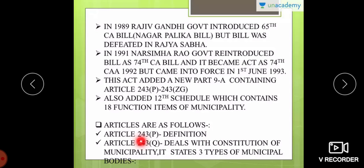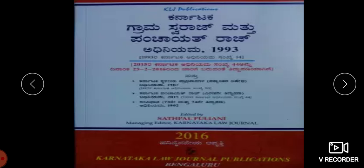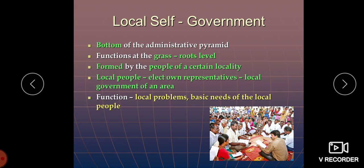Article 243P contains definitions, and Article 243Q gives details about the constitution of municipalities, stating the three types of municipal bodies. The Karnataka Grama Swaraj and Panchayat Raj Adhinayama 1993 is what we follow. Local self-government is at the bottom of the administrative pyramid.